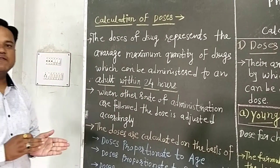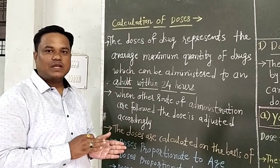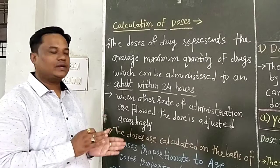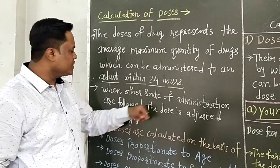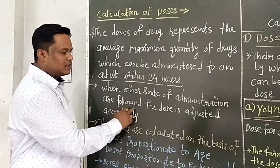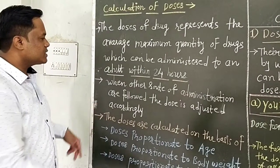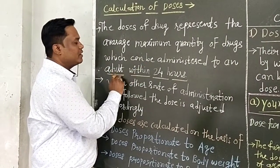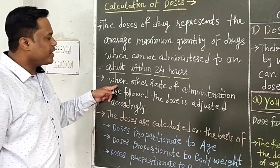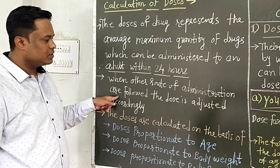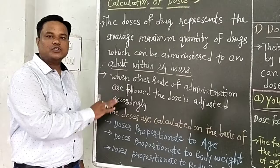In the case of infants and children, the dose can be varied and we have to calculate the doses. When other routes of administration are followed, the dose is adjusted accordingly — whereas the standard dose for an adult is given orally.